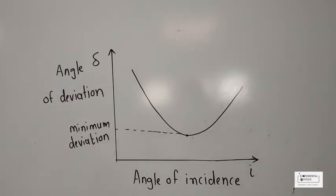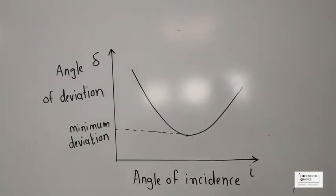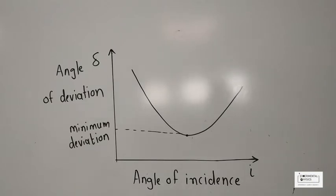This graph is between angle of deviation Delta on the y-axis and angle of incidence I on the x-axis. This graph is specifically defined for the prism, and this is exactly what we saw in our demo. I will show you bit by bit how the demo of the prism is related to this graph.